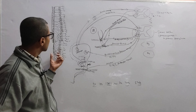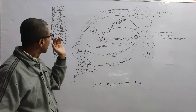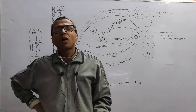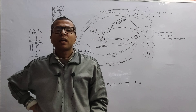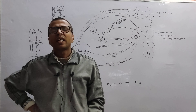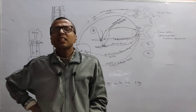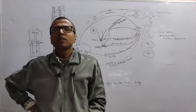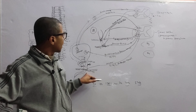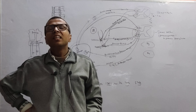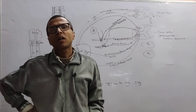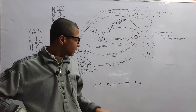This incontinence is not due to detrusor contraction but due to overflow from over-distension, because the parasympathetic supply has been compressed and the detrusor cannot contract. In this condition you need to make the detrusor contract by giving an M3 agonist. An example of an M3 agonist is bethanechol. So in damage to S2, S3, S4, retention occurs.